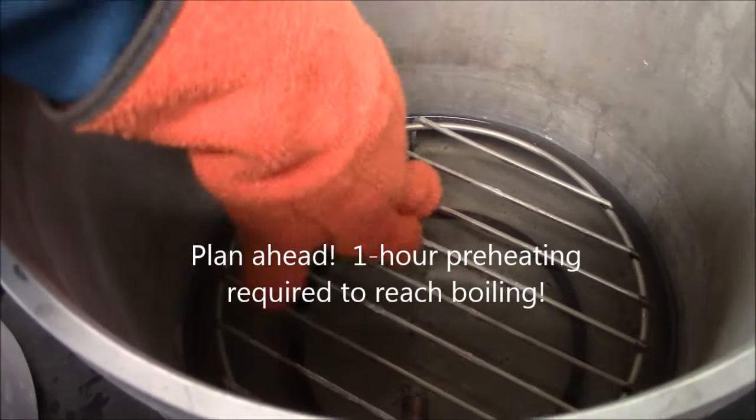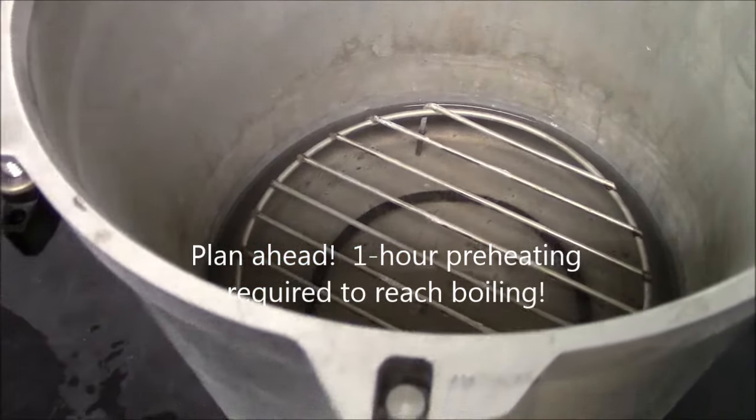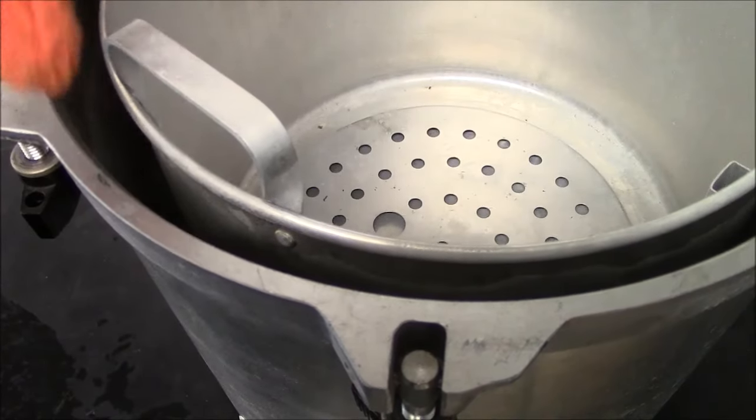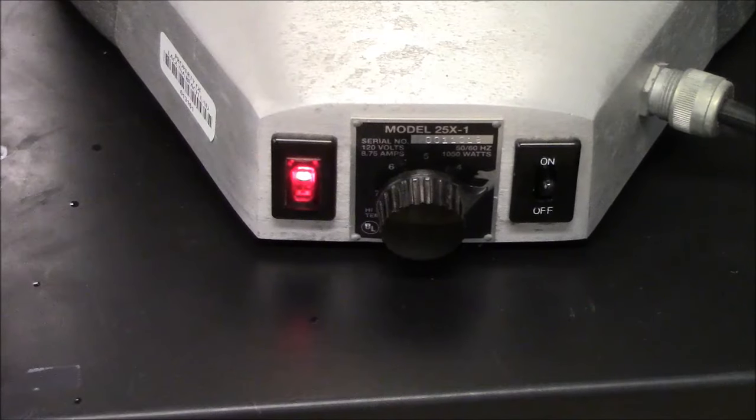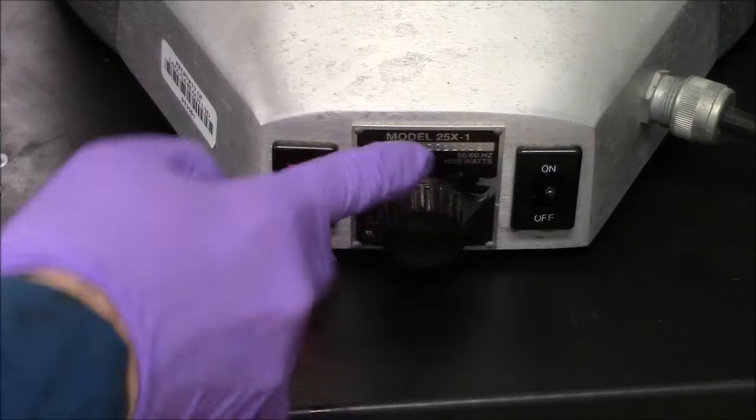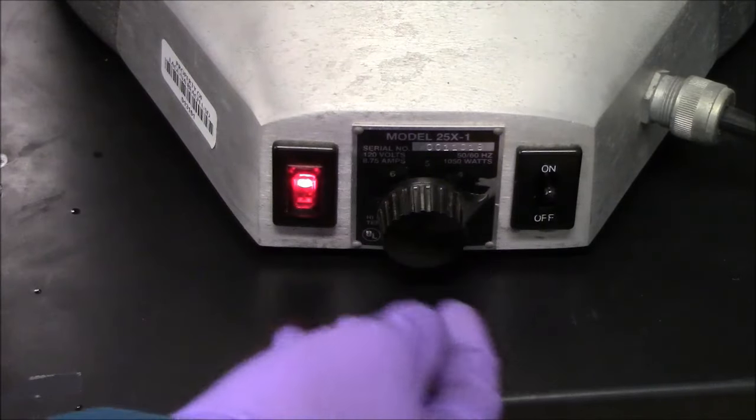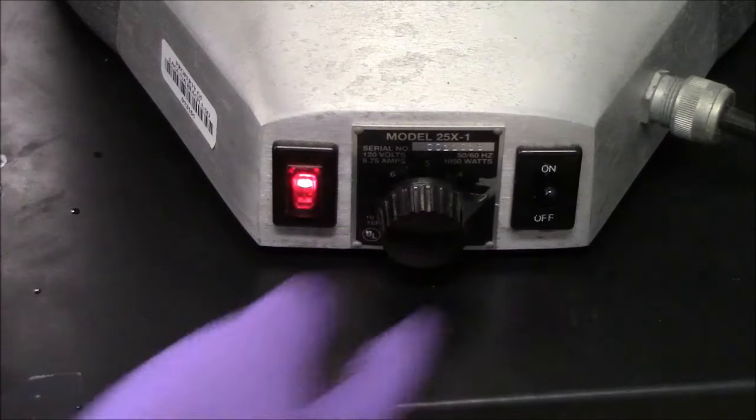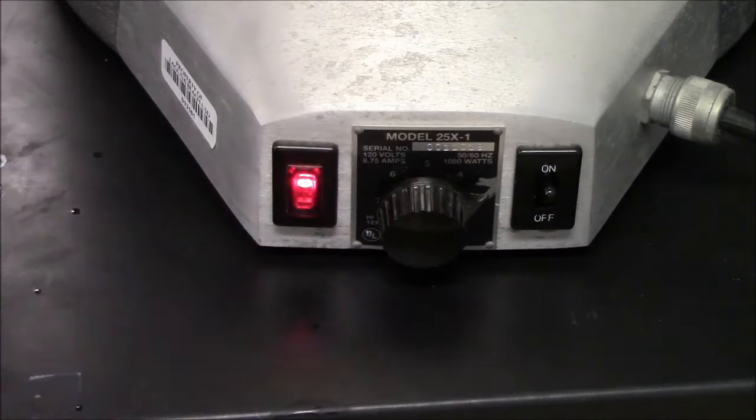You'll notice there's a platform here on which the actual container will rest. Here are the controls. This is the power knob. I've made a little notch here on the side showing you this is where the dial should be. This on off switch tells you when the heating element is actually heating.